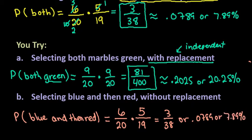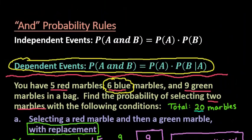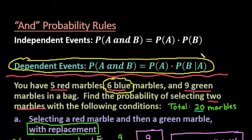To recap: if the events are independent — meaning the probability of the second event is not influenced by the first — you use the probability of A times the probability of B. If the events are dependent, you use the probability of the first times the probability of the second given that the first already occurred. Thanks for watching — if you have any questions or need additional topics covered, please let me know.